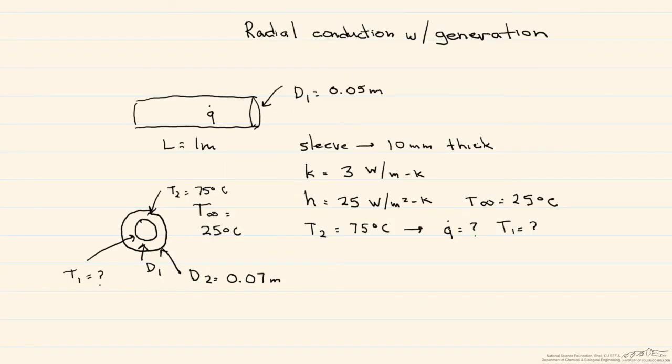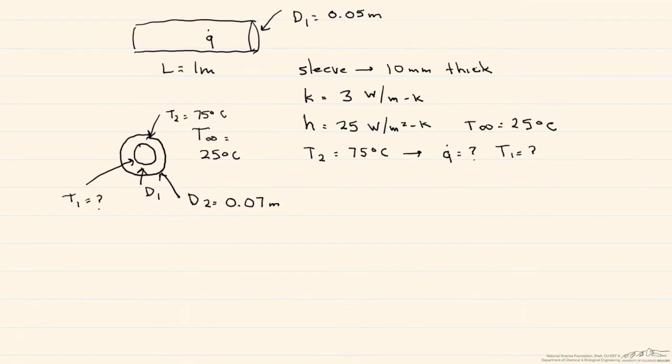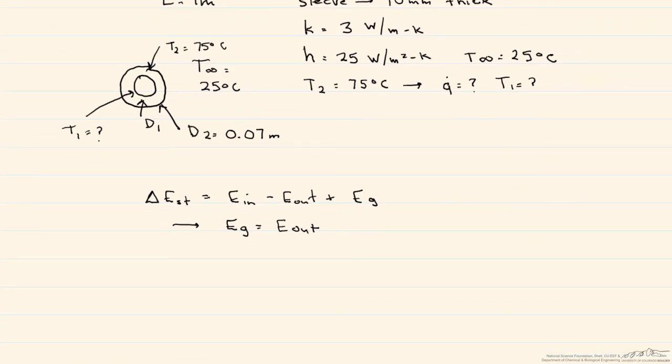The easiest way to solve this is to start with the overall energy balance. So what that says is the change in energy storage is equal to E in minus E out plus E generated. In other words, for our system, our generation is equal to E out. So what's E out? E out is convection.